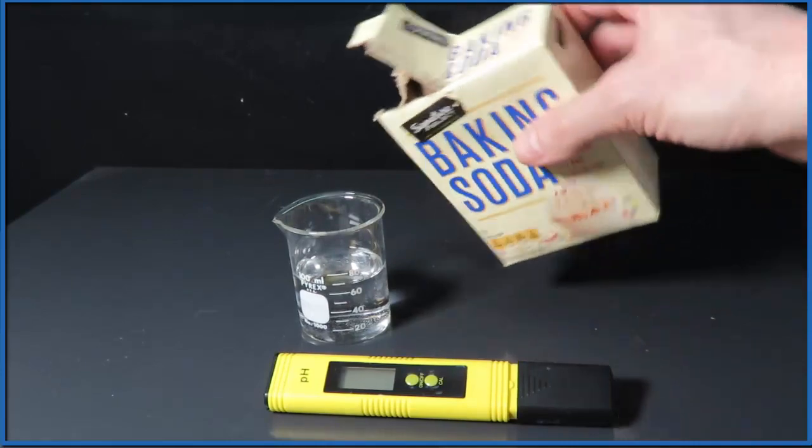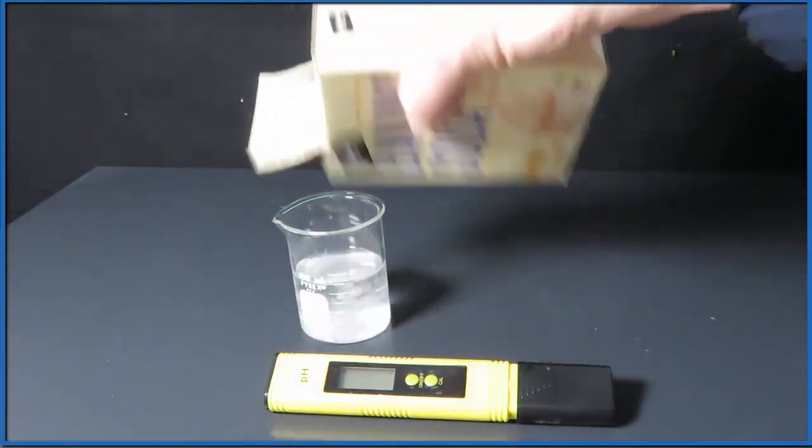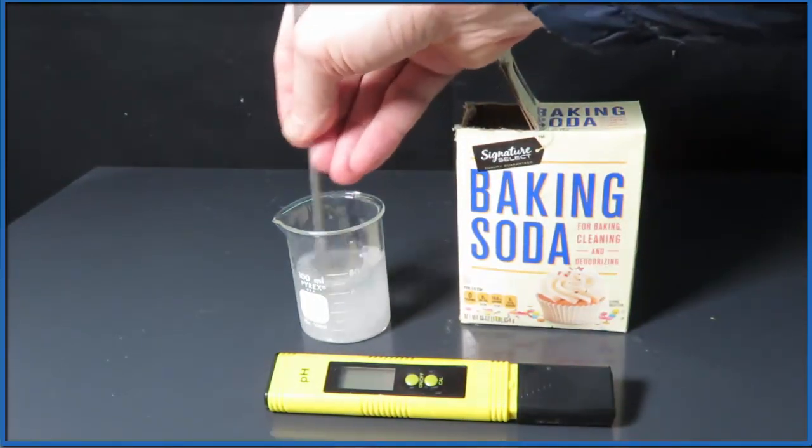We can also use a pH meter to figure out the pH more accurately. So we mix some baking soda in with the water, then we're gonna stir that up, get everything dissolved, then we'll put the pH meter in and figure out what the pH is for our baking soda.